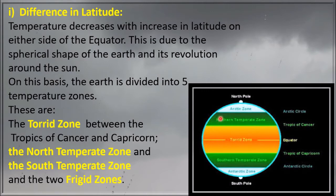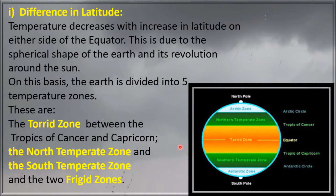Beyond the torrid zone, sun's rays travel a longer distance. The sun's rays fall in a slanting position and heat up a large area. This is because of the inclined axis and revolution of the earth. Most of the heat is absorbed by clouds and water vapour or reflected back on dust particles. Thus, there is a fall in temperature as we move towards the poles.